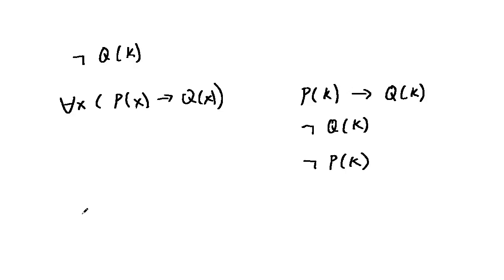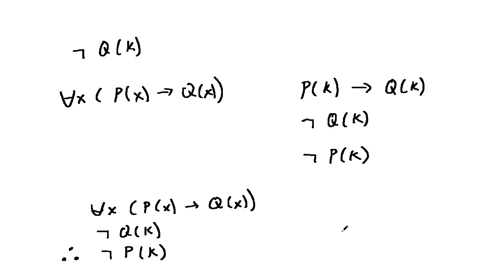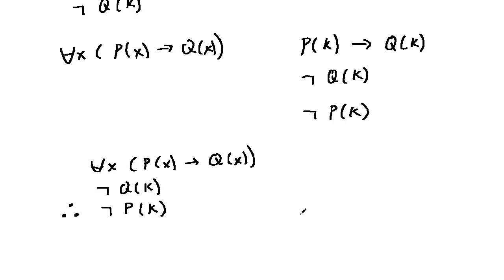In other words, Kimberly is not a student. Thus, we have the following rule of inference: for every x, p of x entails q of x; not q of k; therefore not p of k. This is called universal modus tollens.